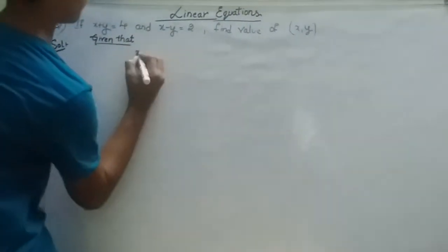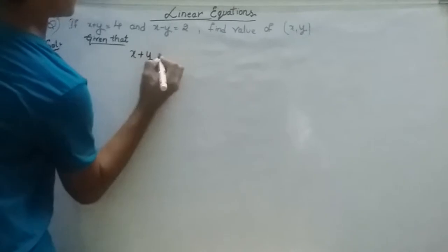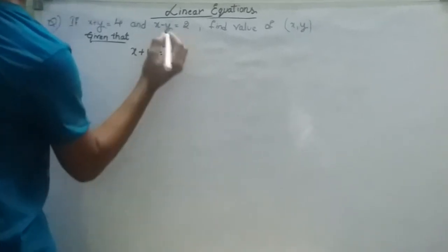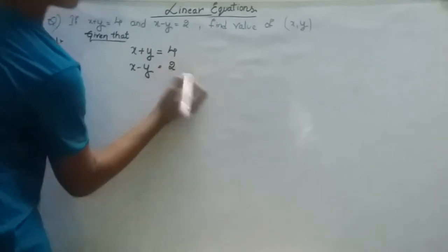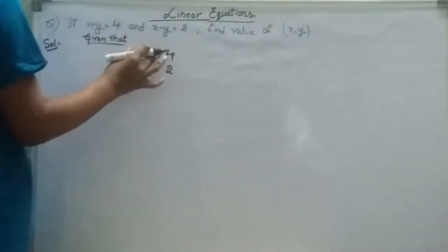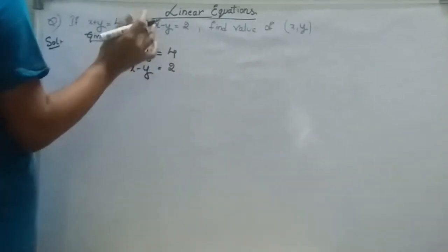We are given that X plus Y is equal to 4, and X minus Y is equal to 2. This is one equation and this is another equation.